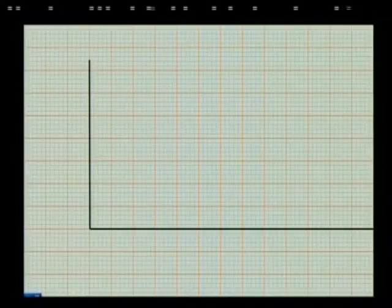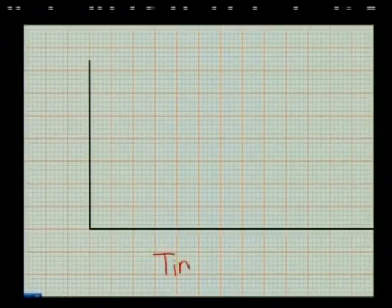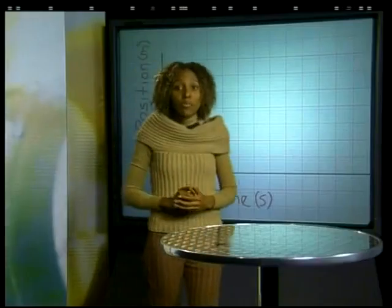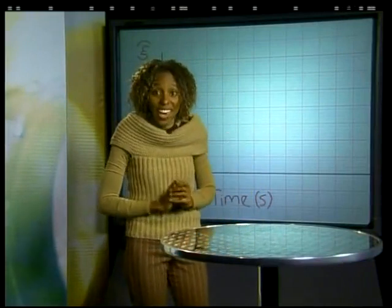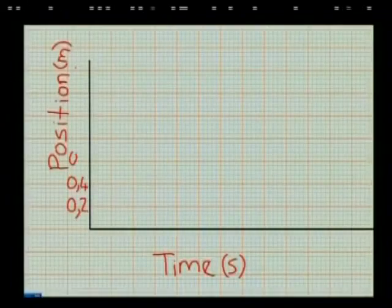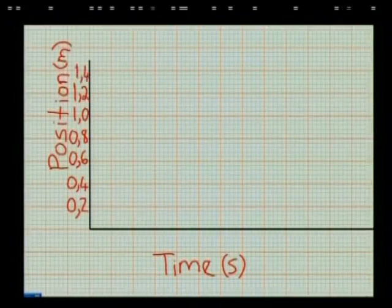A useful way to represent the data about the trolley's movement is to plot a graph of position against time using the data in the table. Can you predict the shape of this graph? Time is the independent variable, so we place it along the horizontal axis, and position goes on the vertical axis. The time is measured in seconds and the position is measured in meters. The trolley moved forwards from 0.2 meters to 1.2 meters. I have seven blocks on the position axis, so I choose a scale to fit in all the readings. Each large block represents 0.2 meters.